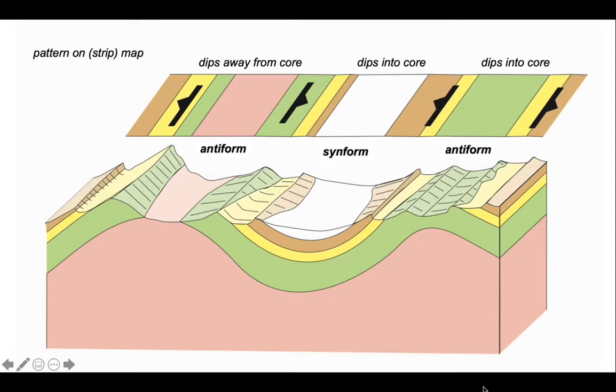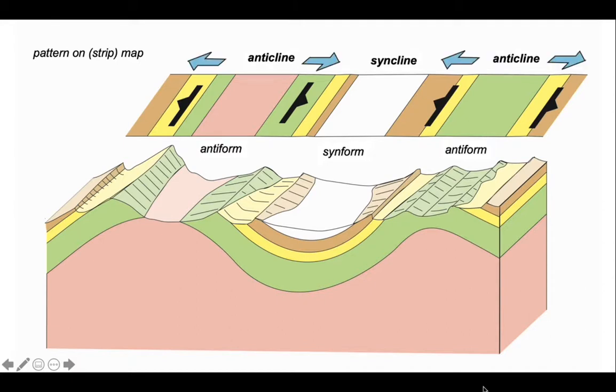So that allows us to use these terms. But if we use the stratigraphic order of rocks, we can see that for the anticlines, the rocks are young in the direction of those blue arrows away from the core. And for the synform, they're young towards the core of the fold.